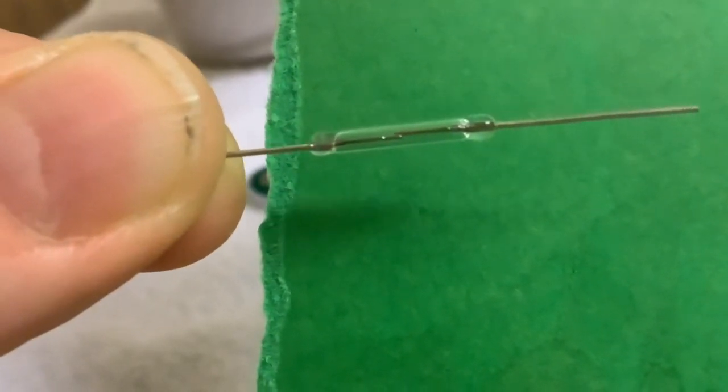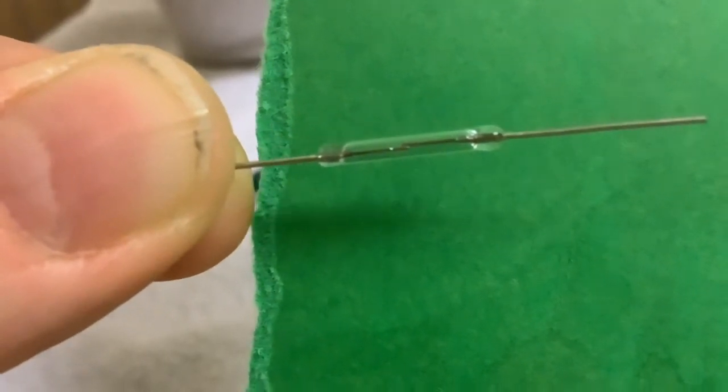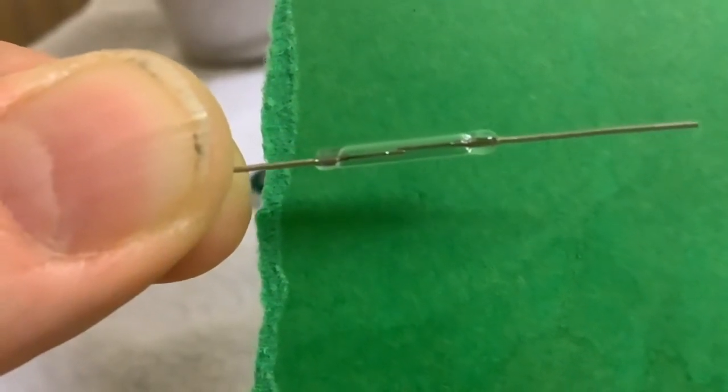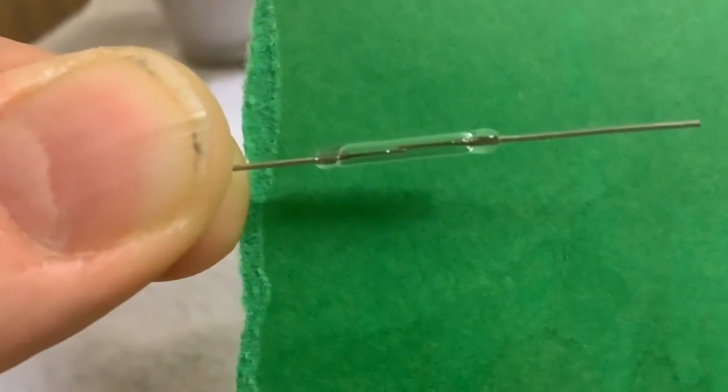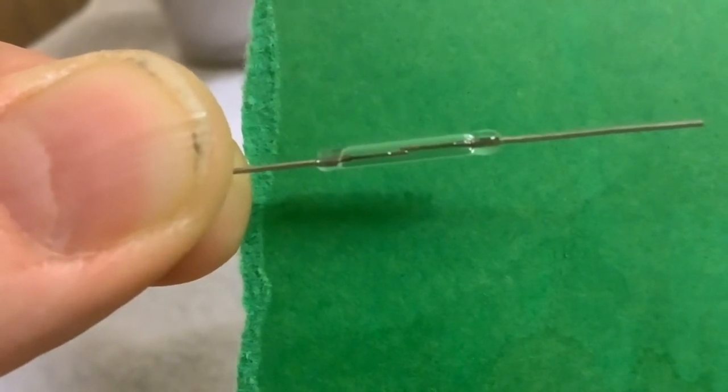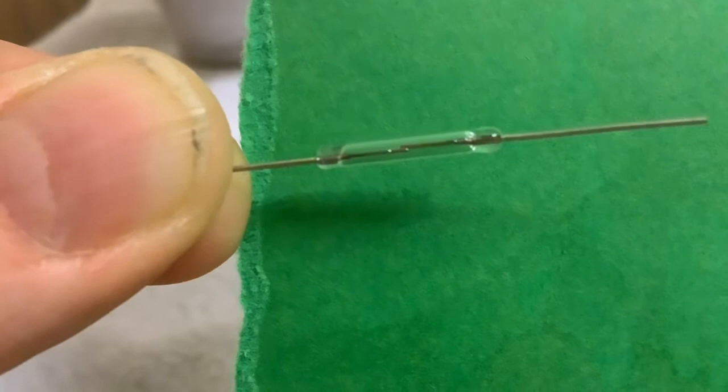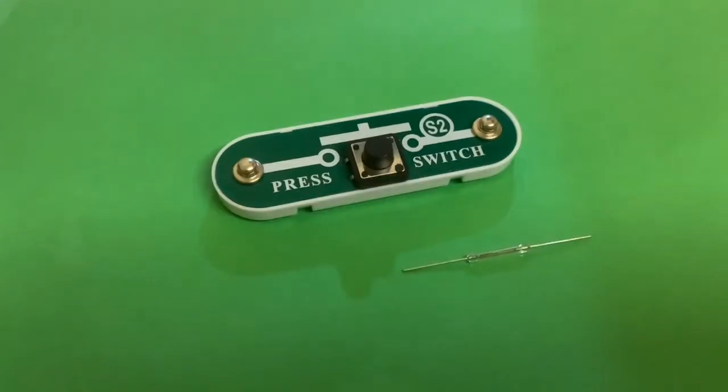When you bring a magnet about an inch away, you can see there's two separate pieces of wire almost touching. When you bring a magnet close to it, they touch and that's the electrical switch action - it completes the circuit.